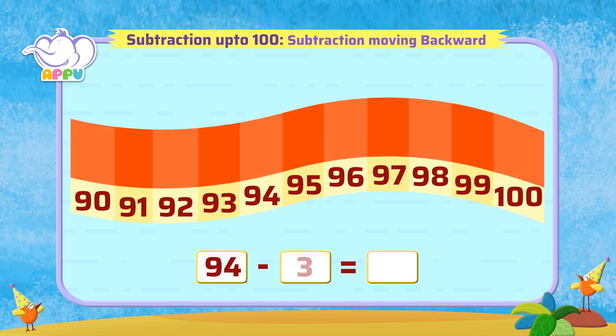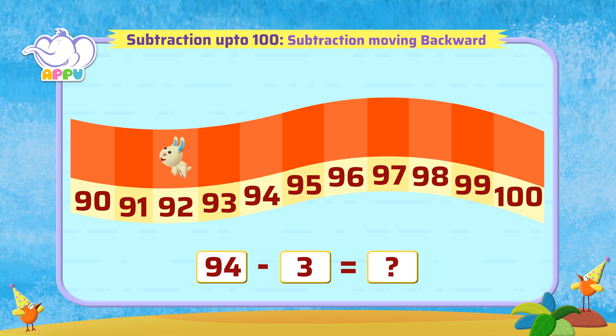94 minus 3. Let's count backwards by 3: 93, 92, 91. That's how to handle that!